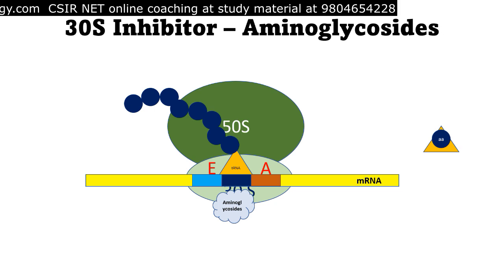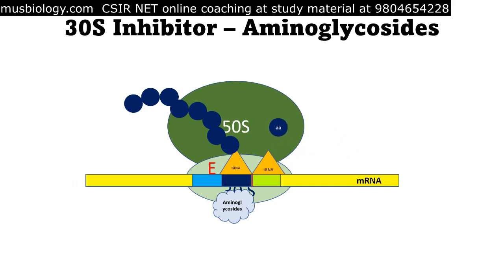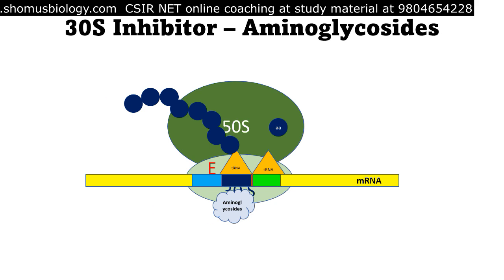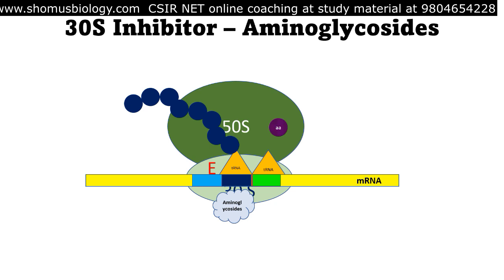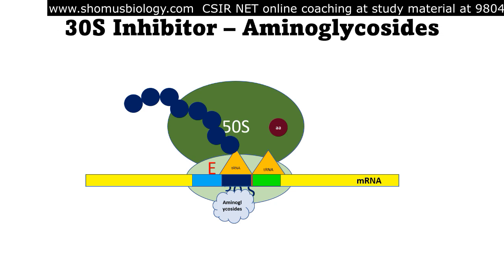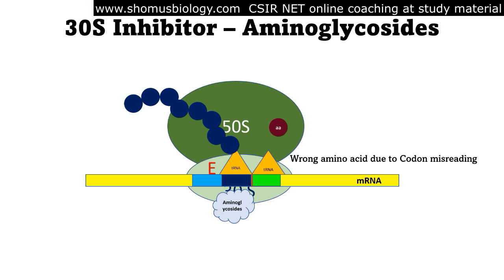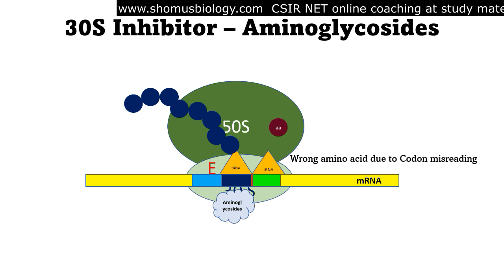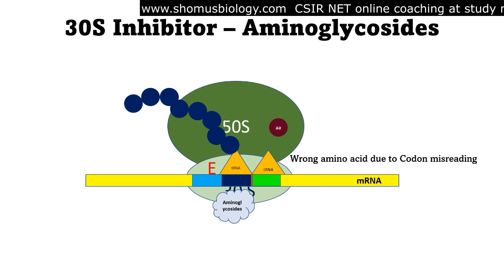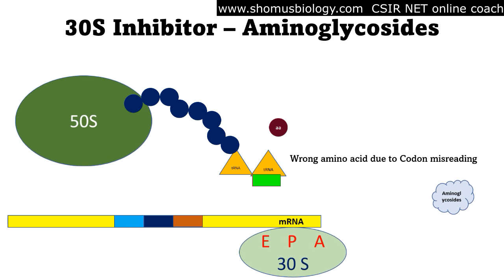When aminoglycosides are present, they associate with the 30s subunit and cause misreading of the upcoming codon at the A-site. The t-RNA then brings an erroneous amino acid — one it should not bring — because it misread the codon. This wrong amino acid terminates the process, and even if incorporated into the polypeptide chain, that chain cannot produce the protein the bacteria needs to survive. Eventually the bacteria will die and components dissociate.